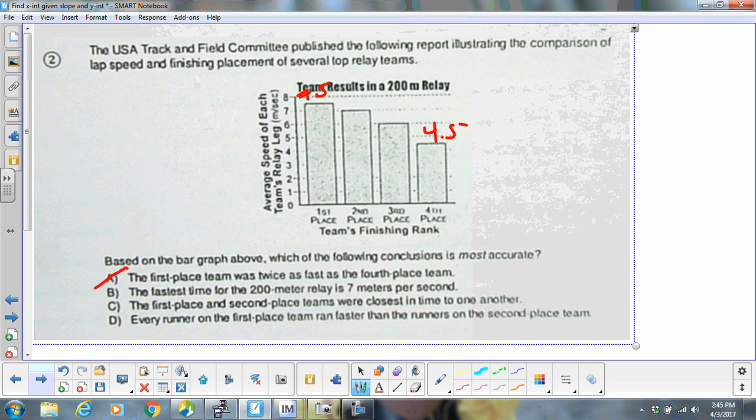It does say most accurate, so we're going to look through and see what we got. The first place and second place teams were closest in time to one another. They're about half a second off. This one's a whole second and this one's more, so that one looks like it's also a possibility. And every runner on the first place team ran faster than the runners on the second place team. You do not know that, so we're going to mark that out.